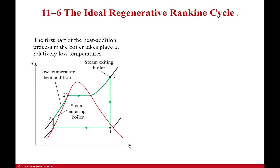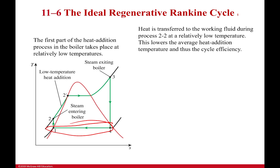We keep looking for ways to improve our cycles. We reheated it last time, so now let's talk about regeneration. The first part of the heat addition process in the boiler takes place at pretty low temperatures. Our efficiency is based on the temperature where we add heat and the temperature where we reject heat, so we're always trying to add heat at as high a temperature as possible. If we could raise that average temperature, our efficiency would be much higher.